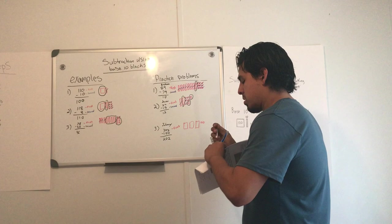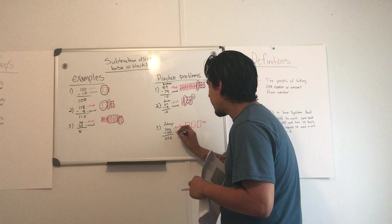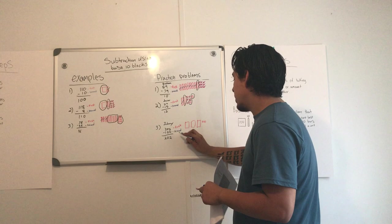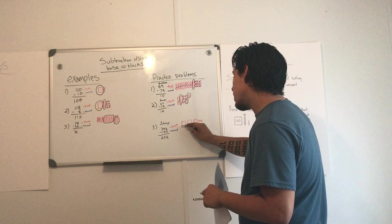Then he went to his second number and crossed off the blocks for the second number. So he only had 100 in the second number. That means he only had to cross out one.